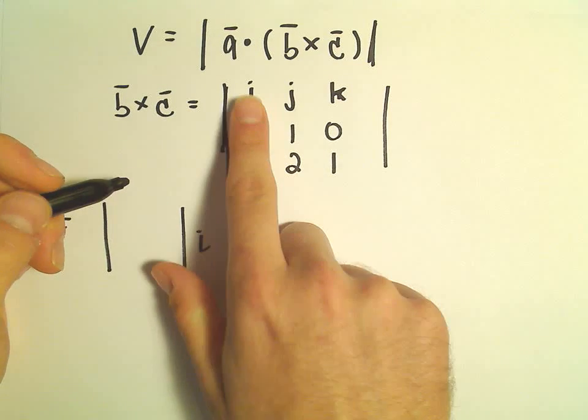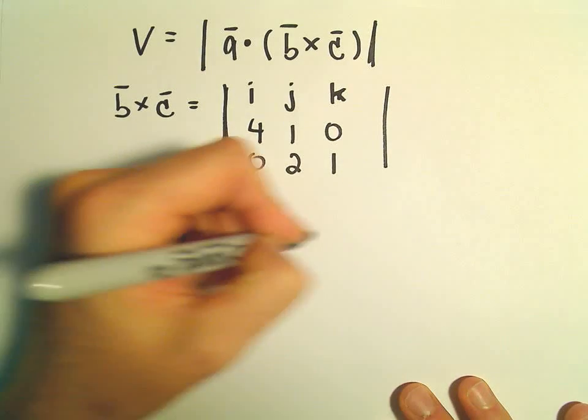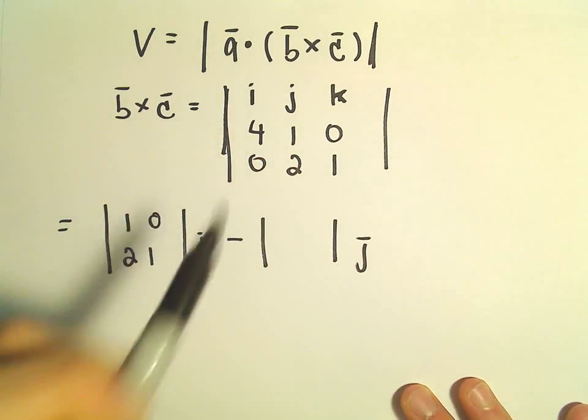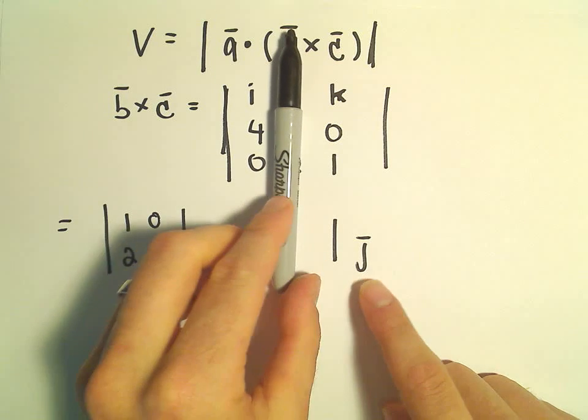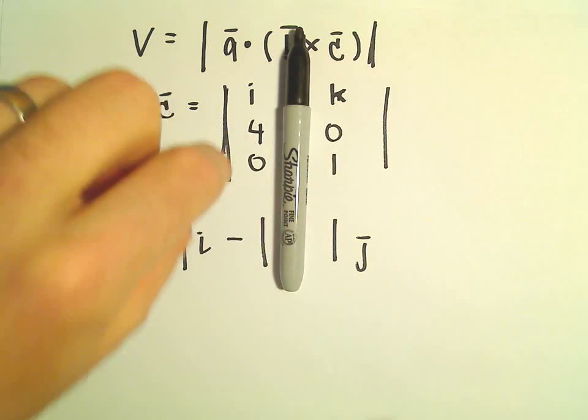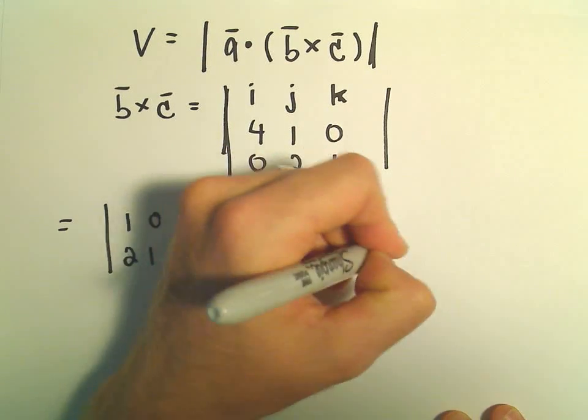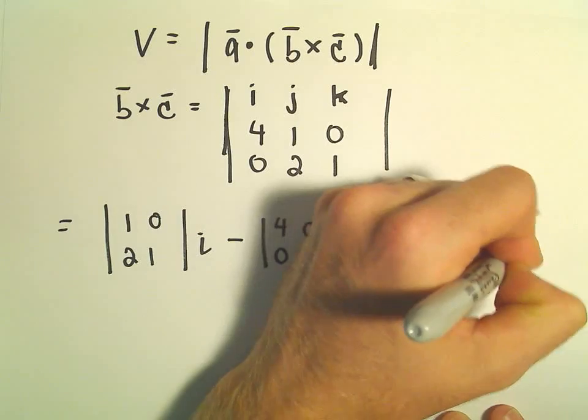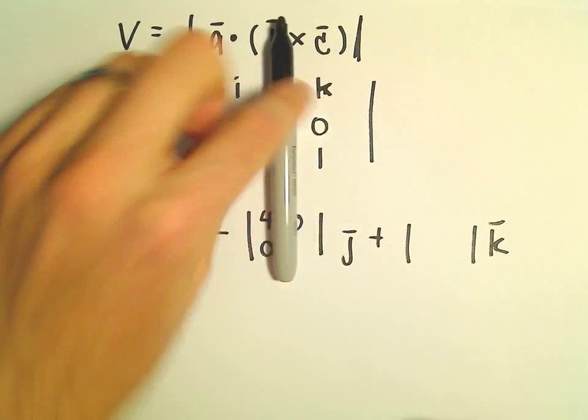When we cover up the i column, we have 1, 0, 2, 1 minus the j component. When we cover up j, we've got 4, 0, 0, 1.